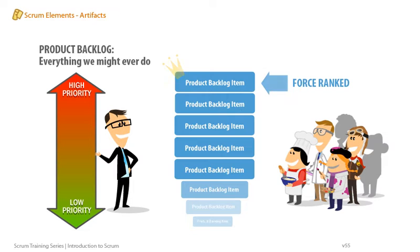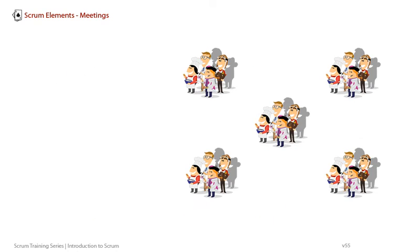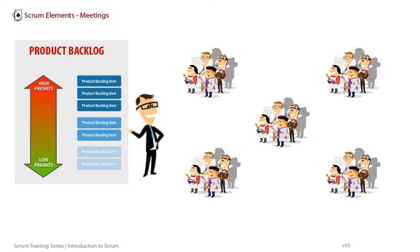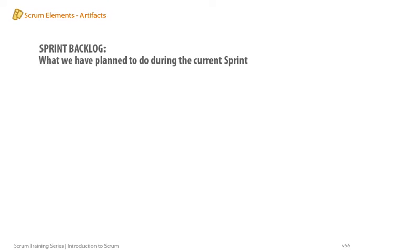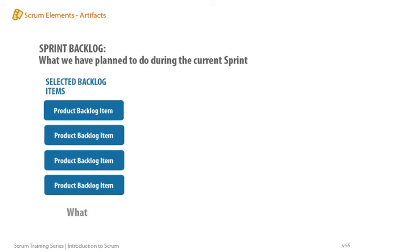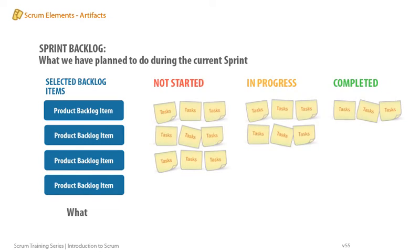Force-ranked means there's only one thing in the top position. Getting organizations to do this is usually a breakthrough. When multiple teams work on the product, there's still only one Product Backlog. The Sprint Backlog is what we are planning to do right now to meet our current Sprint goal. It has an end date and contains a subset of Product Backlog items selected for the Sprint plus a plan for how to do them, such as a list of Sprint tasks.